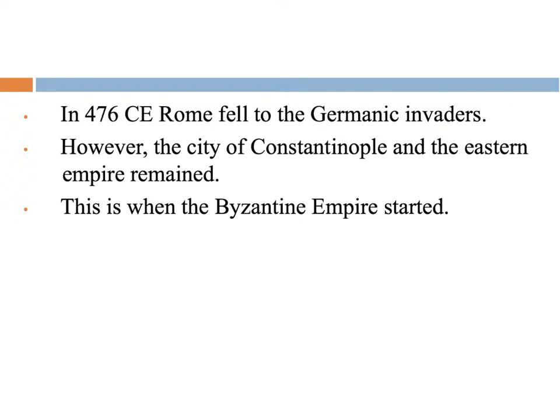The Western Roman Empire fell to the Germanic invaders and ended in 476 CE. Constantinople and the Eastern Roman Empire continued on — it has been renamed the Byzantine Empire. In this time period, the people thought it was still the Roman Empire, but historically we call it the Byzantine Empire to show that there's this division in time.